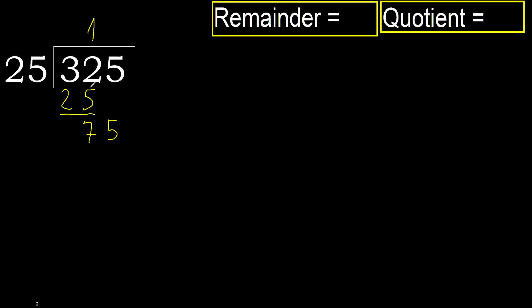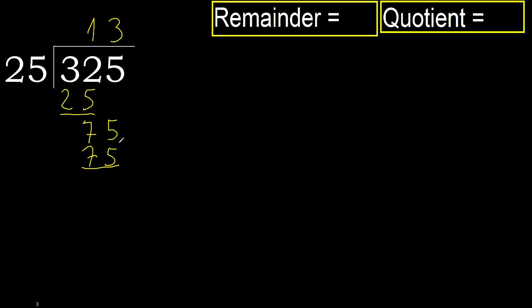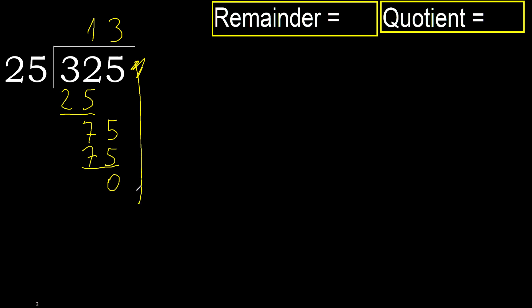75. 25 multiplied by 3 is 75 — 75 is not greater. Ok, subtract: 75 minus 75 is 0. Next — there is no number, therefore finish it.